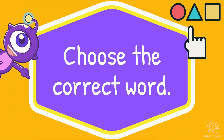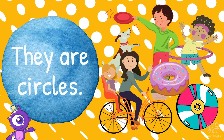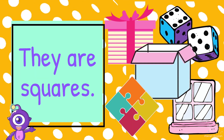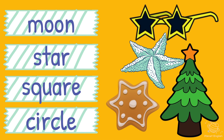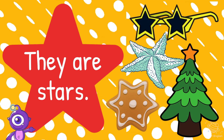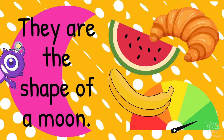Now choose the correct word. What shapes are they? They are circles. What are these? They are squares. What are these? They are squares. What shapes are these? They are the shape of a moon.